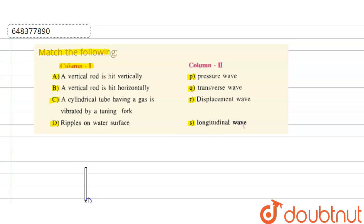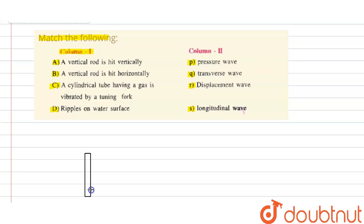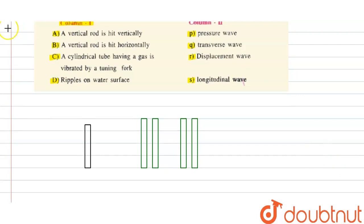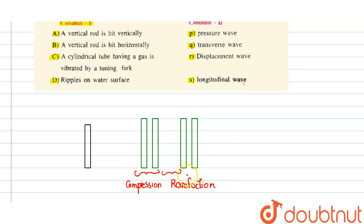In Column 1, the first option is a vertical rod is hit vertically. Let us assume this is the vertical rod. When the vertical rod is hit vertically, the waves travel in the form of compressions and rarefactions. We know that compressions and rarefactions occur in longitudinal waves. So, option A corresponds to longitudinal waves, which is option S.